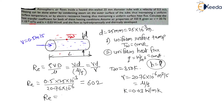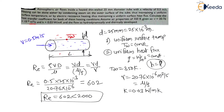The Reynolds number is 602, which is less than 2000. For flow through a pipe, when Reynolds number is less than 2000 it is laminar flow. Therefore the flow here is laminar.